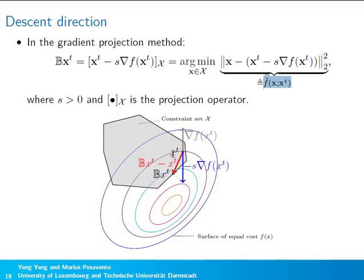Here is a simple example of gradient projection. Starting from the current point, we move along the direction opposite to the gradient, but this new point may lie outside the feasible region. So we project it back onto the constraint set, and the projected point is the output of the gradient projection method.